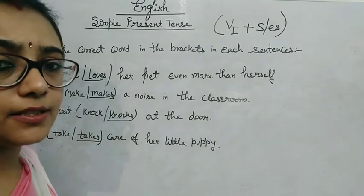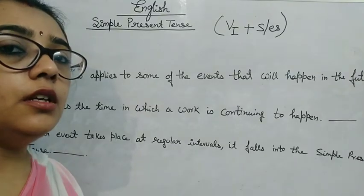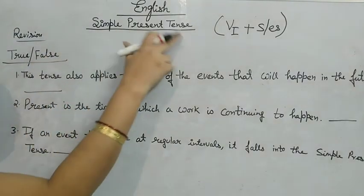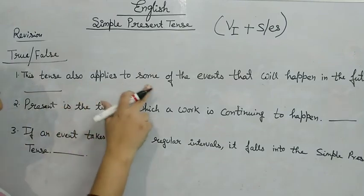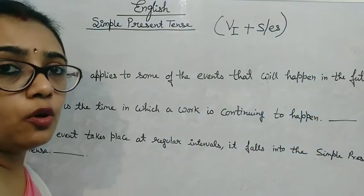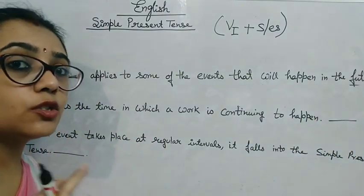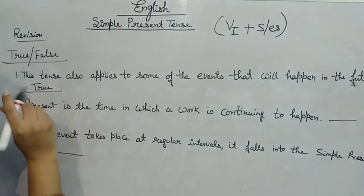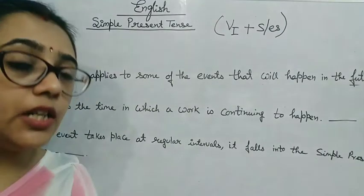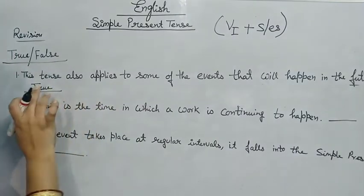The third exercise is true/false. Statement: simple present tense also applies to some events that will happen in the future. This is true, because simple present tense covers events decided in the present that will happen in the future.